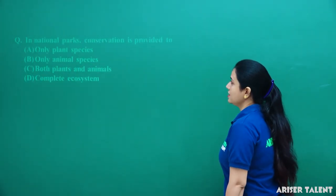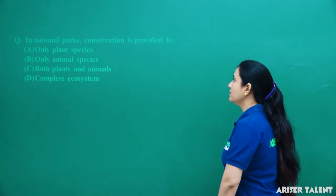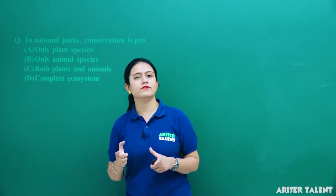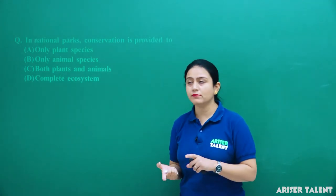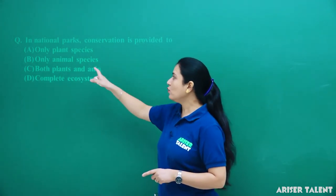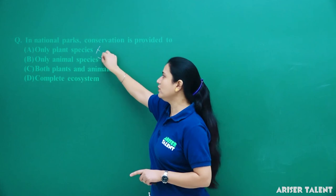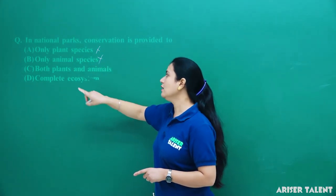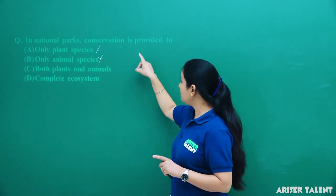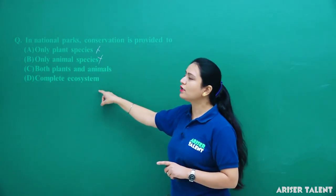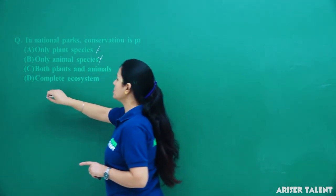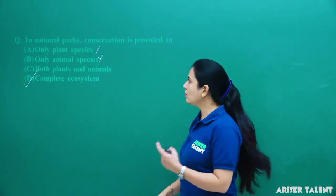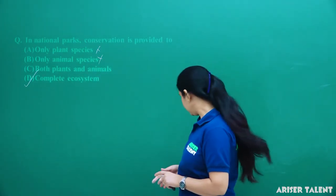Next, in national parks, conservation is provided to — only plant species, only animal species, both plants and animals, or complete ecosystem? National parks provide conservation to both plants and animals, but more specifically they provide conservation to the complete ecosystem. So option D is the most suitable answer.